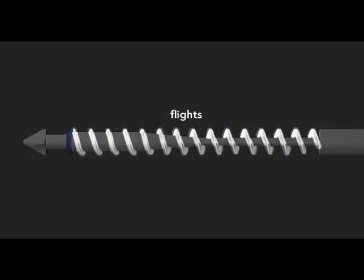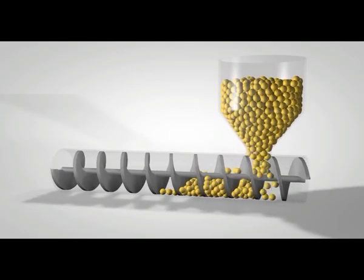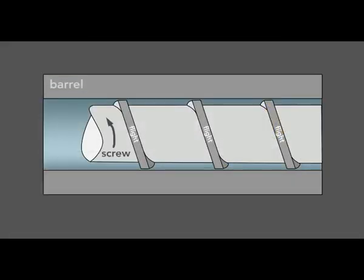Second, the screw has flights that wrap around the shaft. As the screw rotates, the flights transport the raw material forward through the barrel. The flights also serve to mix the plastic. The screw action agitates the melting pellets within the flights to create a uniform mixture.